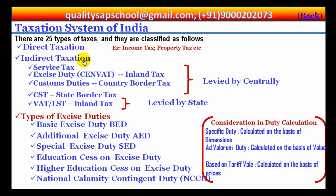Whereas indirect taxation means taxes collected on products — the consumers are the ones who ultimately pay the taxes. So whoever is going to consume those products, they are the taxpayers. In this category we have service tax, excise duty, custom duty, and central sales tax.